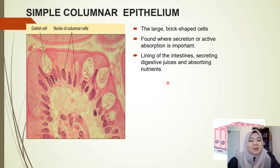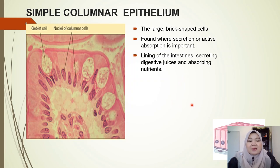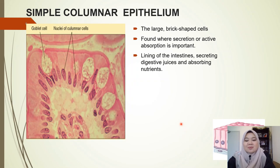The next one is the simple columnar epithelium. These are large brick-shaped cells found where secretion or active absorption is important — for example, in the lining of the digestive system, such as the intestine, where secretion of digestive juices and absorption of nutrients take place.